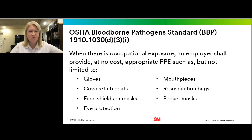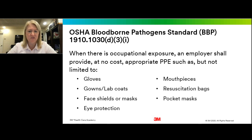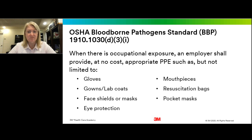OSHA's bloodborne pathogen standard — BBP — addresses what employers must provide and what we should be using. It includes gowns, gloves, masks, face shields, eye protection, and also mouthpieces and resuscitation bags. Always look back to the OSHA guidance to see what they have to say — they are very clear on what we need to be doing in practice to be safe.